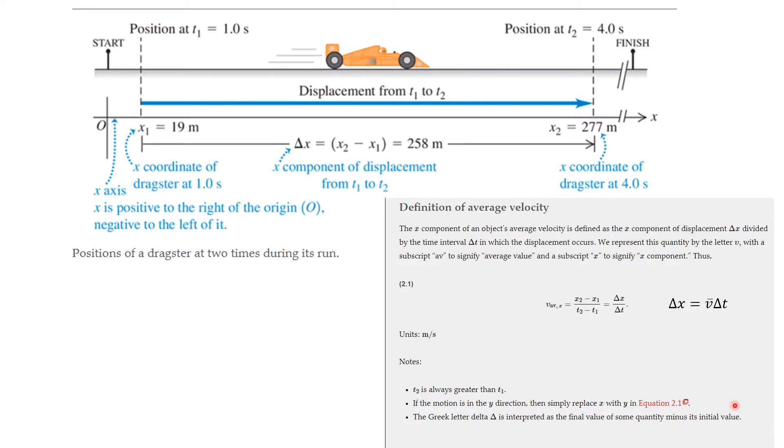Now, the units of velocity are going to be meters per second. And in this case, t2 is greater than t1. And if the motion is in the y direction, we just replace x with y, it still could be in a line. In fact, the guy jumping out of the balloon basket was going straight down. And the Greek letter delta is interpreted as the final value of some quantity minus the initial value. And also, you can think about that as the change. So this is the change in x over the change in t.